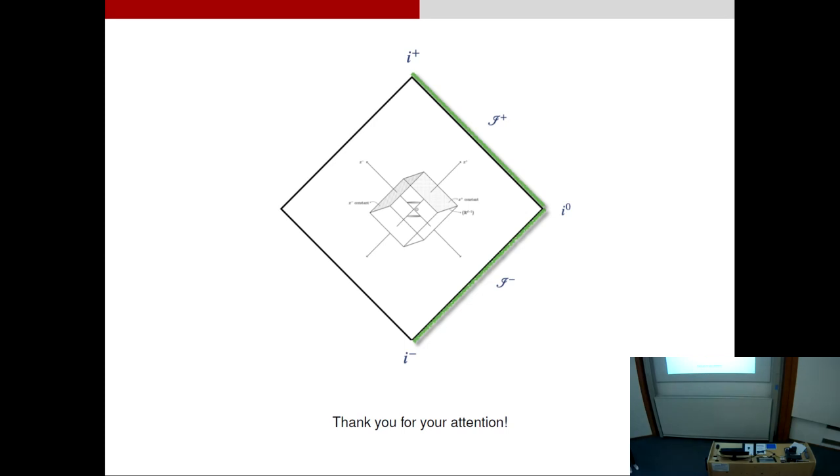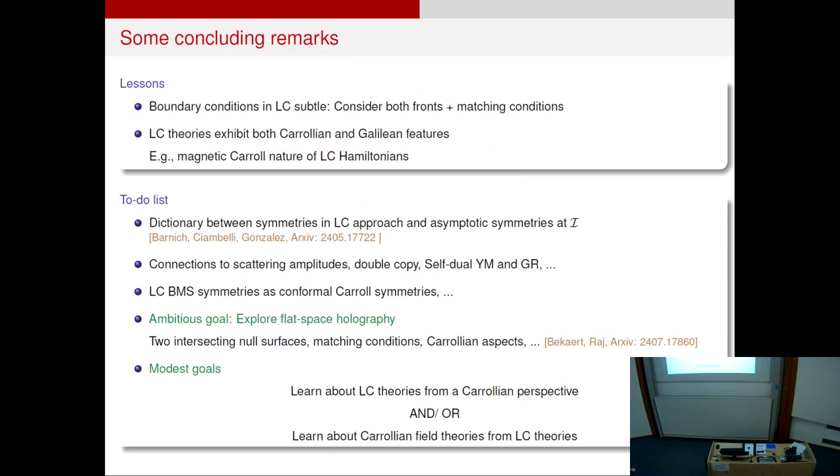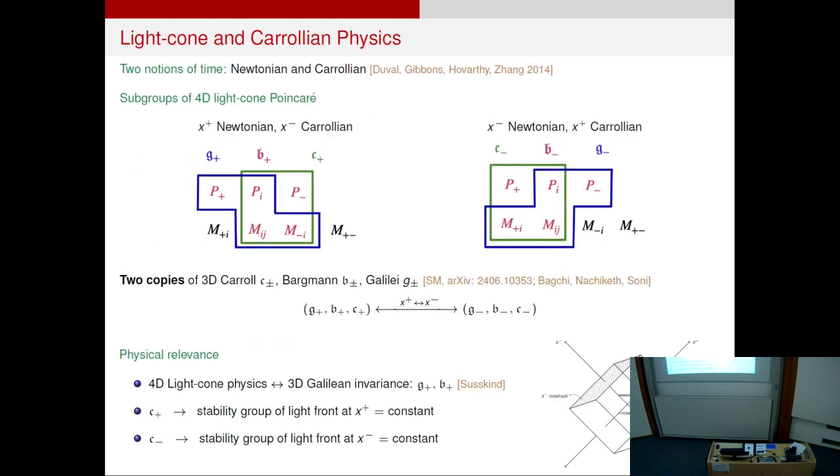Thanks a lot. Can you say again what was the problem with the zero mode in your scatter example? In the scalar example? And did you get it in the end?